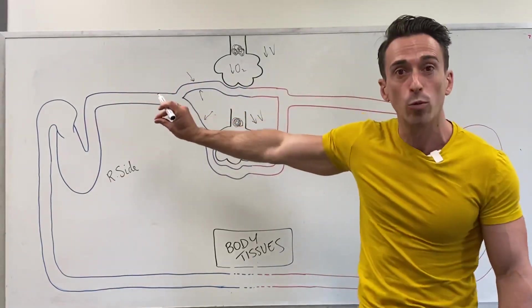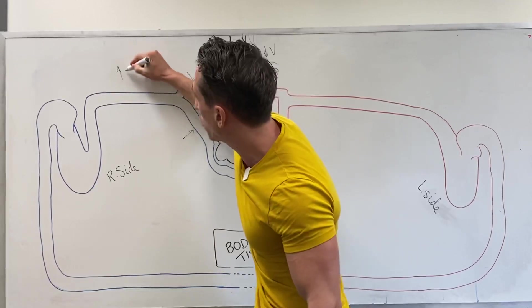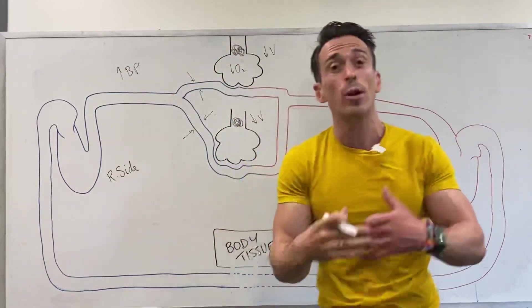Backing up in the pulmonary arteries means you get an increase in blood pressure here, and you get pulmonary hypertension.